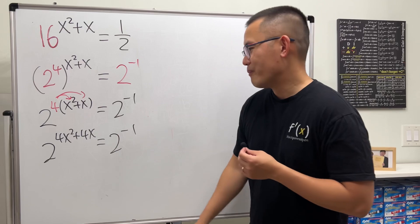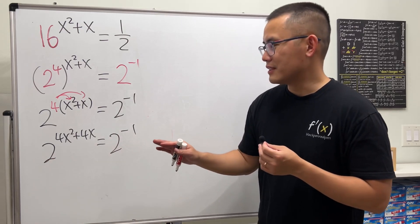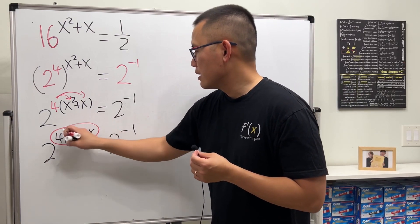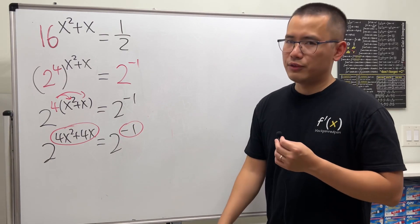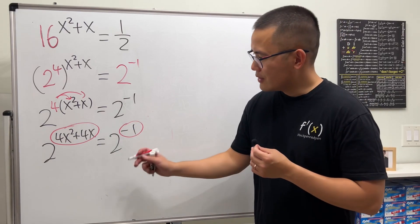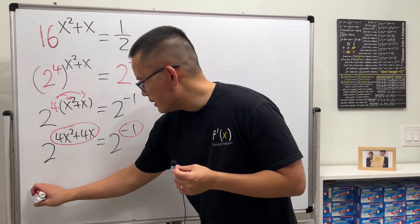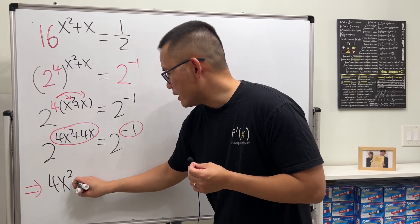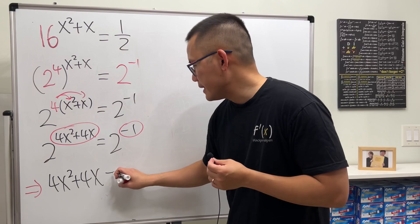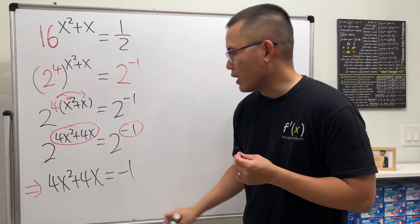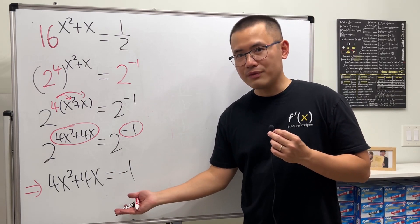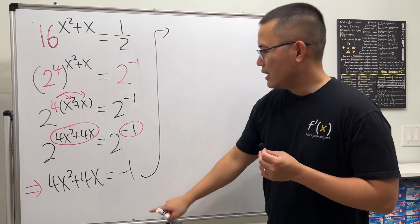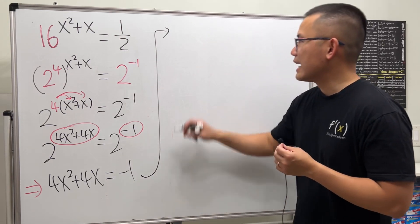Since the bases are equal, the exponents must be equal to each other. So we just need 4x squared plus 4x to equal negative 1. We now have a quadratic equation. To solve this, let's move the negative 1 to the other side, giving us 4x squared plus 4x plus 1 equals 0.